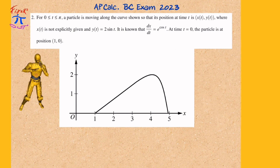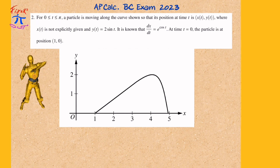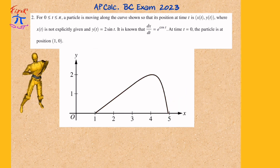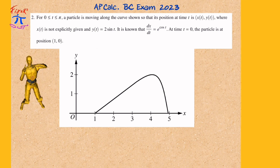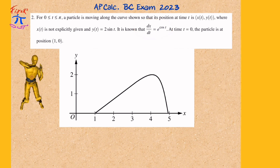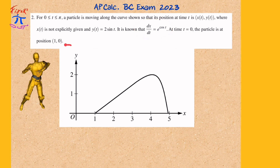For the time interval between 0 and pi, a particle is moving along the curve shown so that its position in time t is given by x of t, y of t, where x of t is not explicitly given and y of t is equal to 2 sine of t. It is known that dx/dt is equal to e raised to the cosine of t, and at time t equals 0, the particle is at position 1, 0.